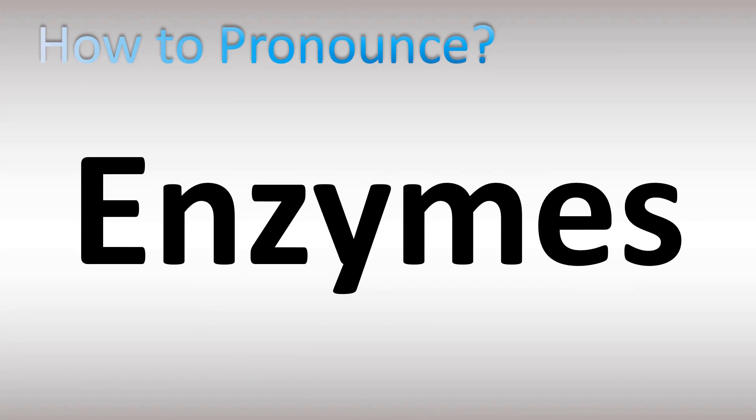In English, this word is pronounced as 'enzymes' — this is the plural. Let's break down the pronunciation: three syllables, stress on the first syllable, on the 'en' syllable — enzymes.